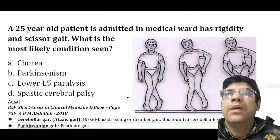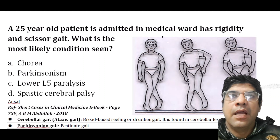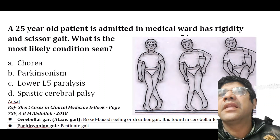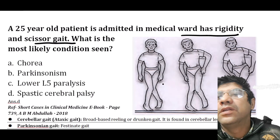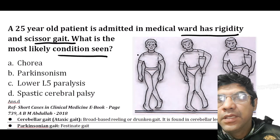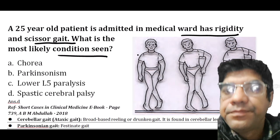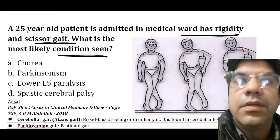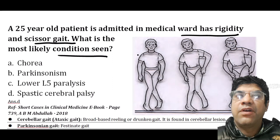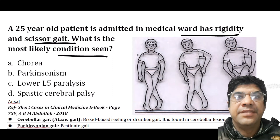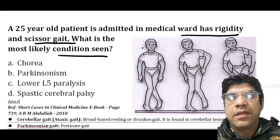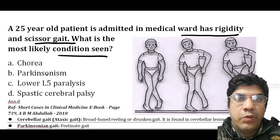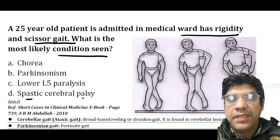A 25-year-old patient is admitted with rigidity and a scissor gait. The most likely condition is spastic cerebral palsy.